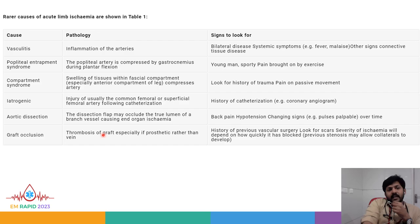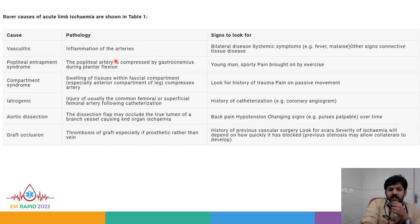Rarer causes of acute limb ischemia include vasculitis, popliteal entrapment syndrome, compartment syndrome, iatrogenic causes, aortic dissection, graft occlusion, and even Raynaud's syndrome. For vasculitis — inflammation of the arteries — look for bilateral disease, systemic symptoms such as fever and malaise, and other signs of connective tissue disease.